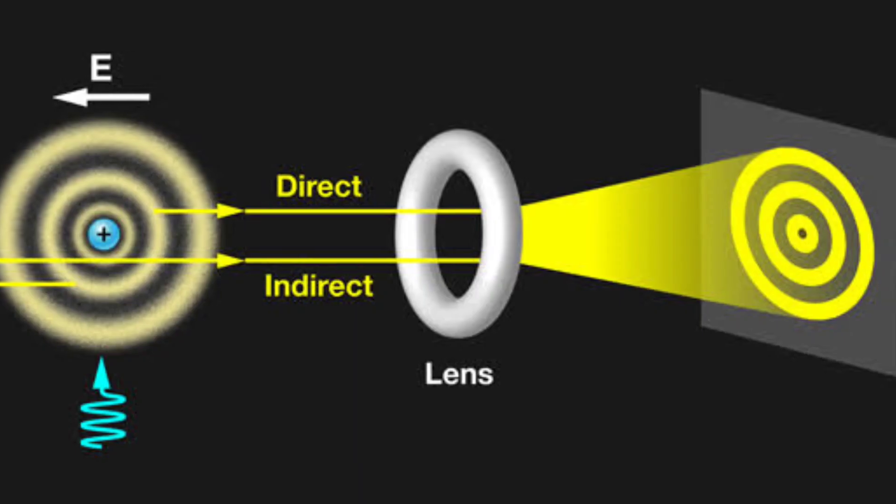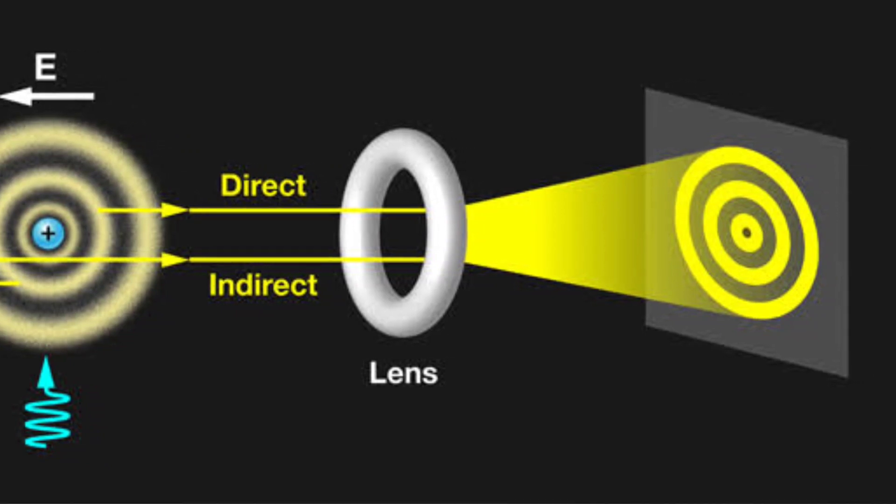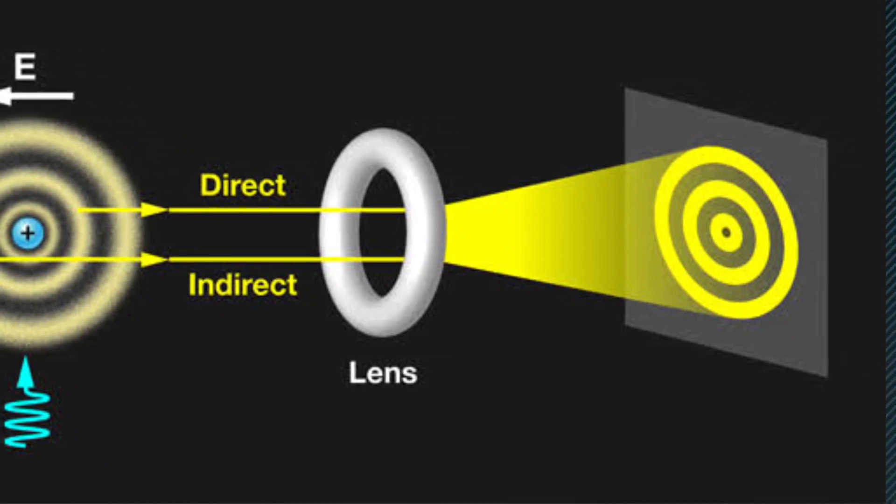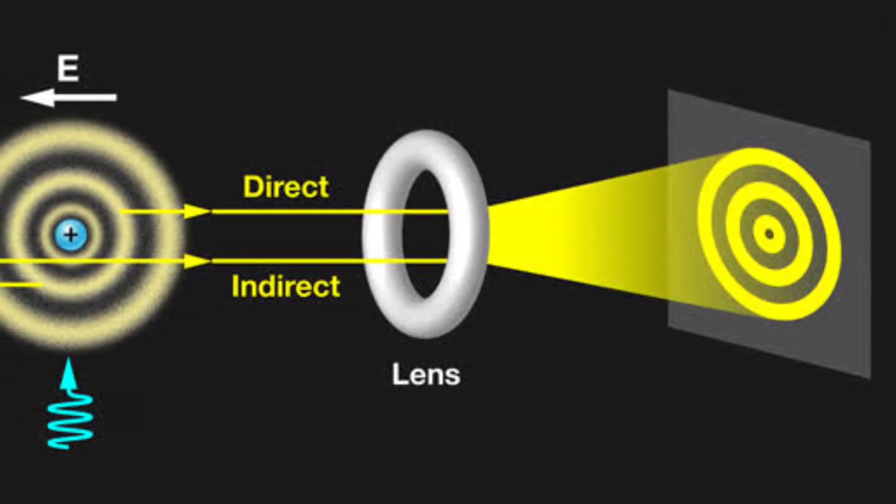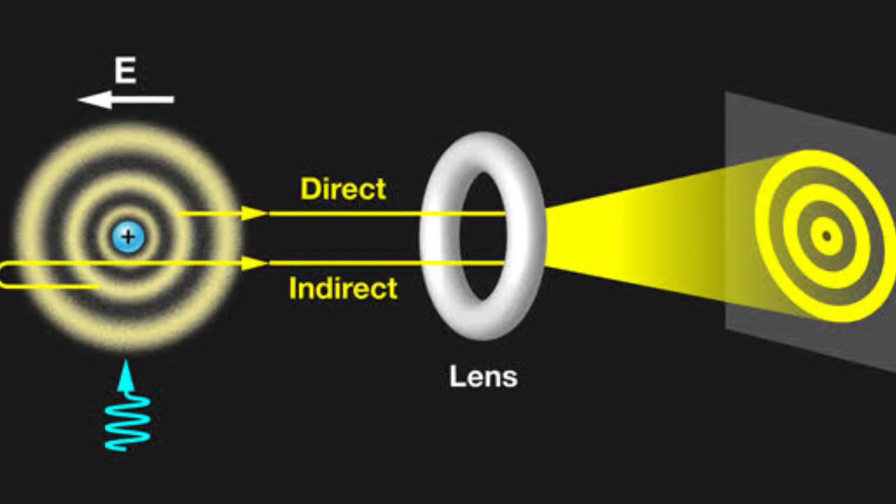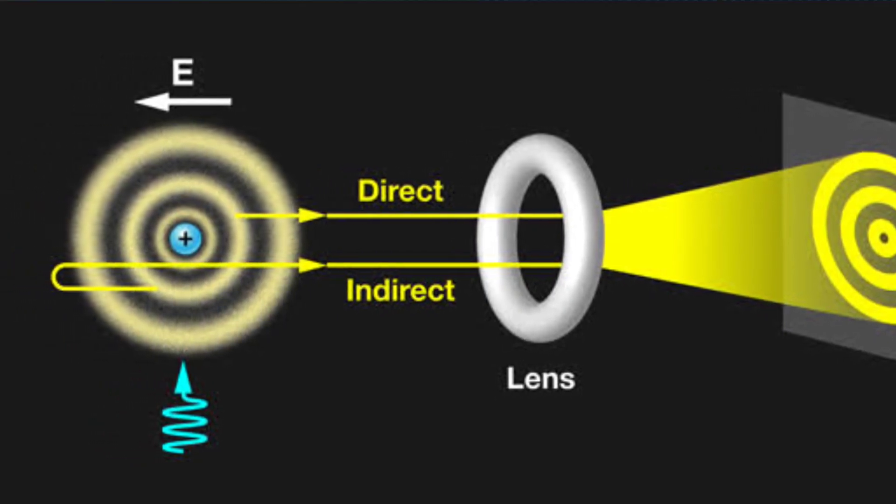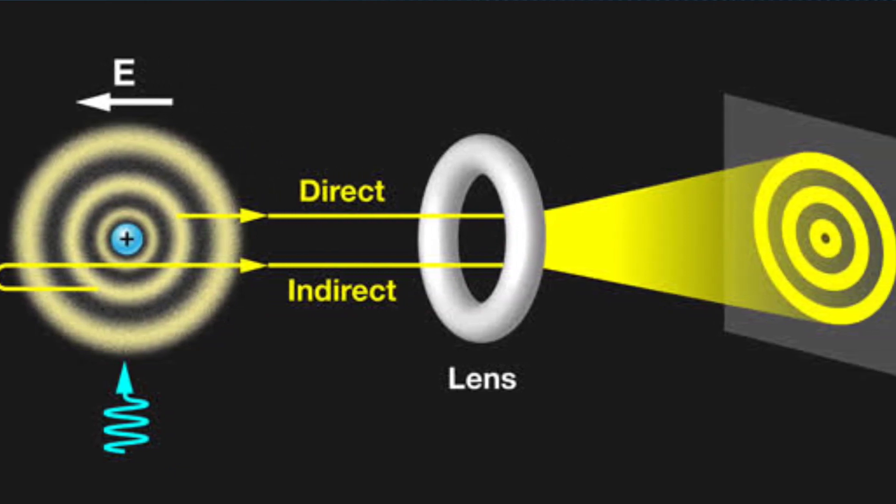But wait, there's more. Enter the uncertainty principle, which states that you can't simultaneously know both the position and momentum of a particle with absolute precision. This isn't due to measurement limitations, but rather a fundamental characteristic of the quantum world. It's as if nature itself has a certain fuzziness at its core.